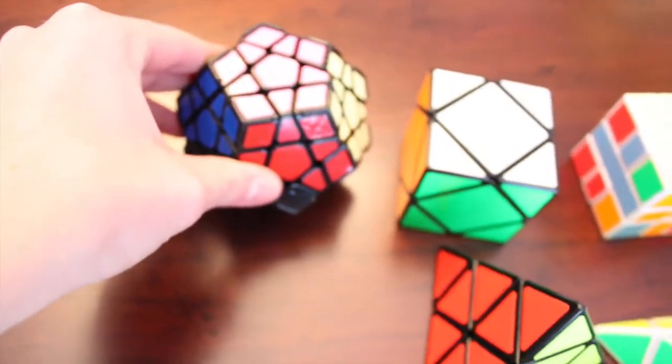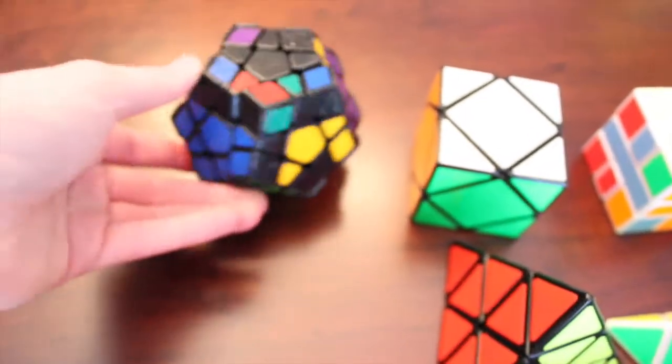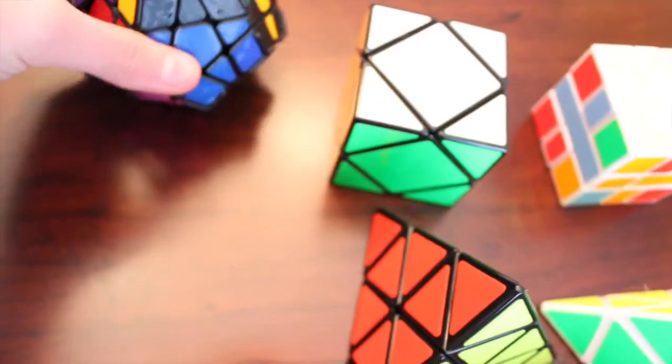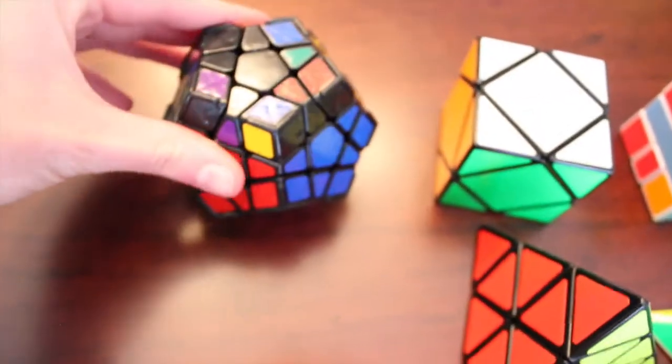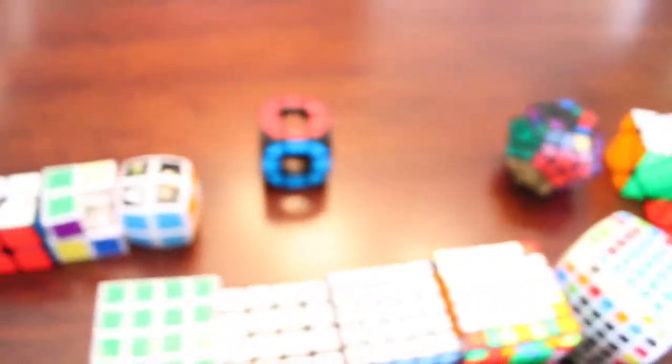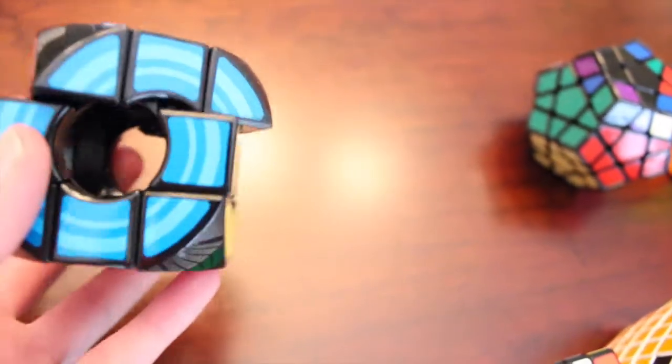And then this Megaminx, which I didn't finish taking the stickers off and then re-stickering it. I actually have really cool stickers. I just think the stickers are pretty nice and I never re-stickered it. So, solved it like once or twice. Intuitive. I never really looked up a tutorial. It's pretty easy to solve by yourself intuitively.